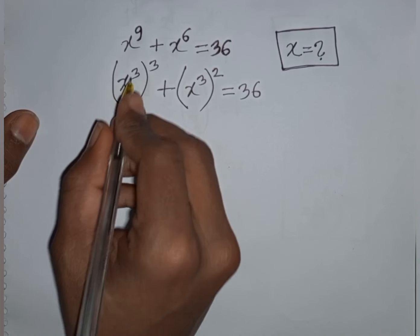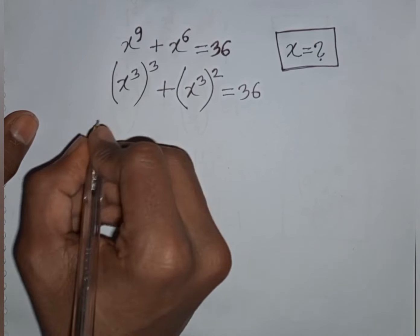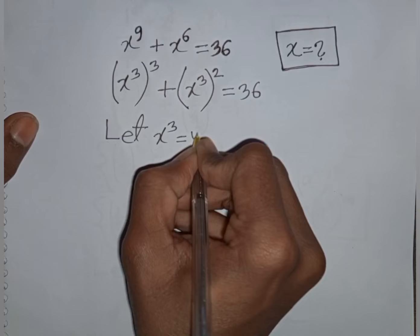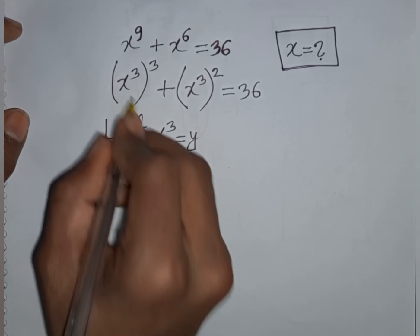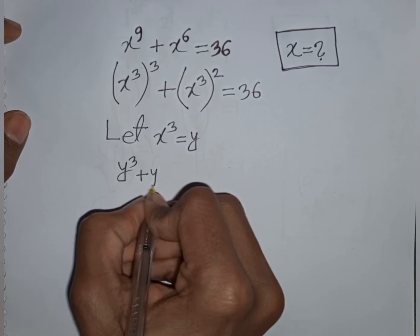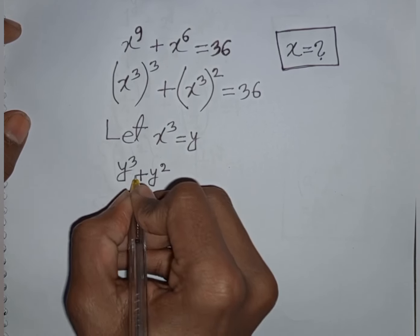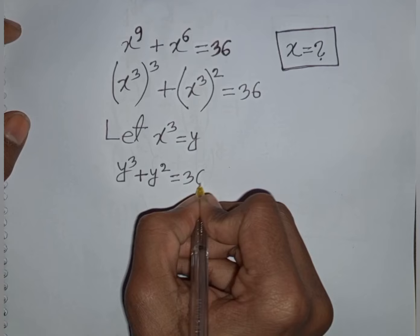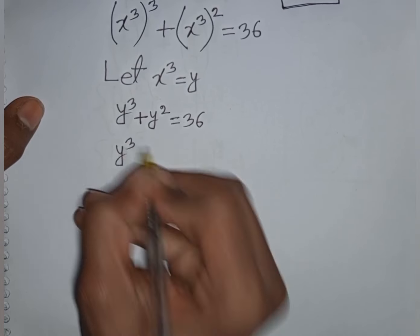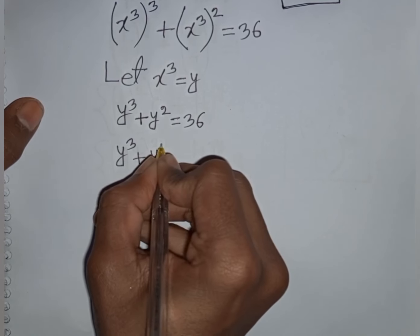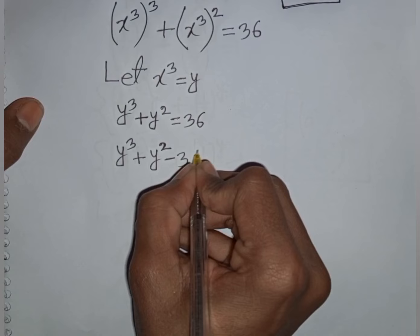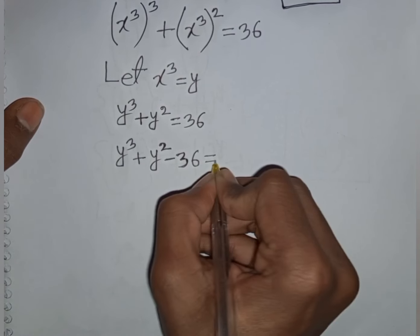Both terms contain x^3, so let y = x^3. The equation becomes y^3 + y^2 = 36, which rearranges to y^3 + y^2 − 36 = 0.